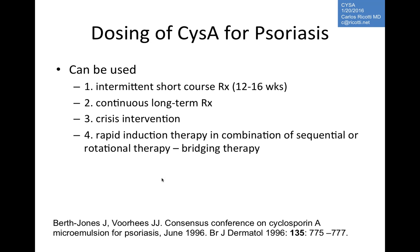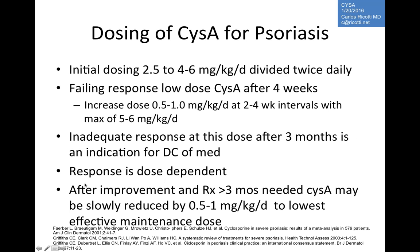Cyclosporine is safe in combination with biologics, serving as bridging therapy. It is also highly used in crisis interventions — patients with severe erythrodermic or acute pustular psoriasis (von Zumbusch type) — because of the need for rapid response. Long-term continuous use and intermittent short courses for psoriasis are moving away from favor given modern biological therapy, though not contraindicated.